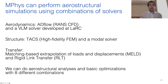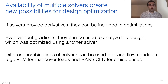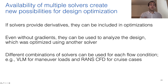Now I'm going to talk about current capabilities in mPhys. Right now, mPhys can perform aerostructural simulations using combinations of solvers. For aerodynamics, we have ADflow, which is a RANS-CFD solver, and a VLM solver developed at Langley Research Center. For structures, we have TACS, a high-fidelity finite element method solver, and a modal solver. For the transfer scheme, we have the MELD and RLT schemes. We can do aerostructural analyses and basic optimizations with eight different solver combinations. Availability of multiple solvers creates new possibilities: if solvers provide derivatives, they can be used in optimizations; even without gradients, they can be used to analyze a design optimized using another solver — for example, optimizing with VLM and evaluating the result with a RANS code in a single analysis.